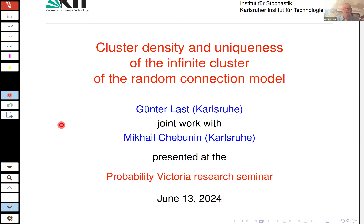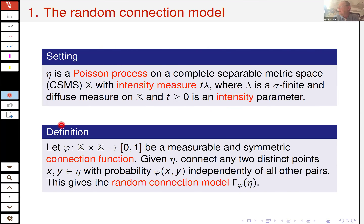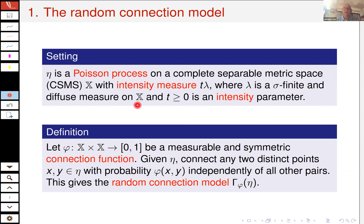Without further ado, let's start. This talk is a mixture of a very general setting and a slightly more specific setting. So the general setting is the following. We consider a Poisson process on some general space — let's say a complete separable metric space — with some intensity measure. The intensity measure is a multiple of some fixed measure lambda, and lambda is some sigma-finite diffuse measure on X.